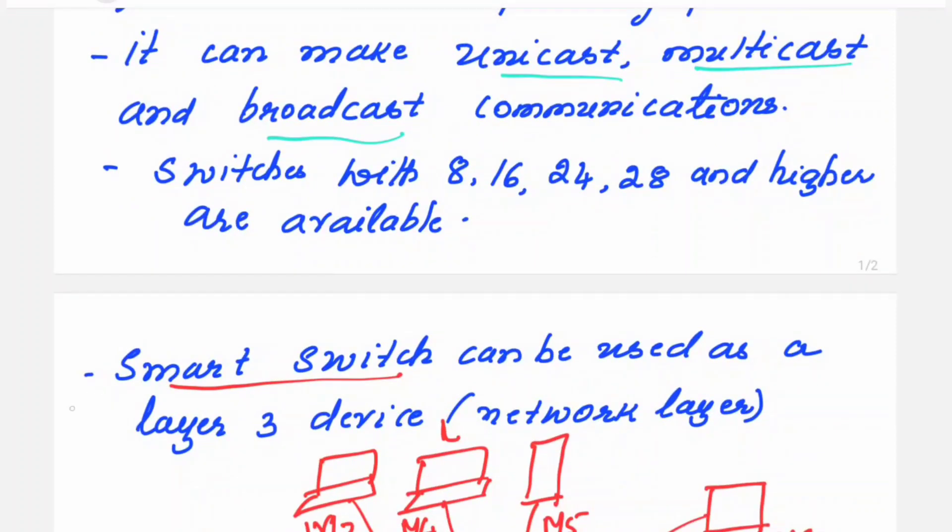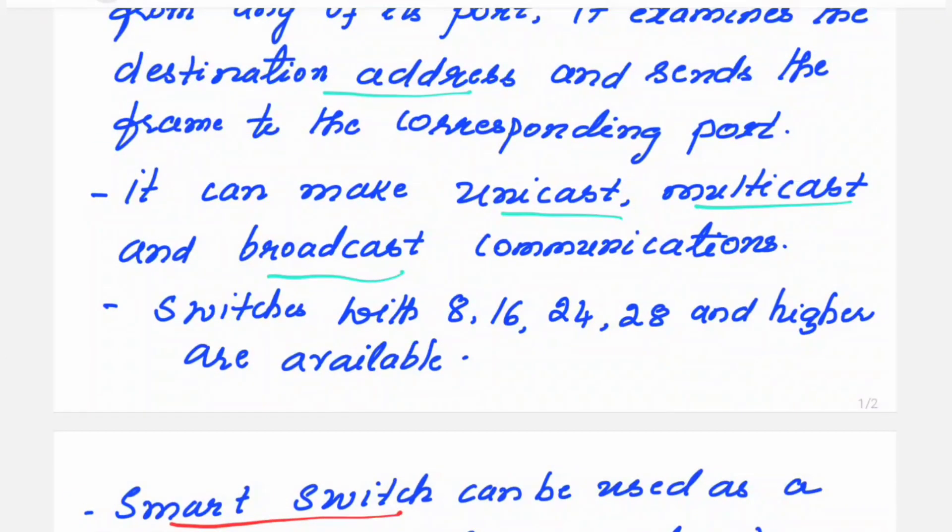In addition to this, there is a smart switch existing which can be used as a layer 3 device. Whenever we use the word smart or intelligent, it means that particular device is possessing more number of features which are very much required for the effective communication in the network.